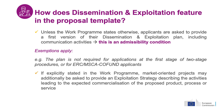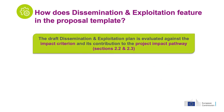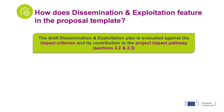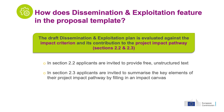In other cases, depending on the requirements of the Work Programme, market-oriented projects may be further requested to include an exploitation strategy detailing the expected path to commercialisation. You will evaluate this first version or draft dissemination and exploitation plan against the impact criterion and its contribution to the project impact pathway, particularly sections 2.2 and 2.3. In section 2.2, applicants are invited to provide free unstructured text. In section 2.3, applicants are invited to summarize the key elements in their project impact pathway by filling in an impact canvas.